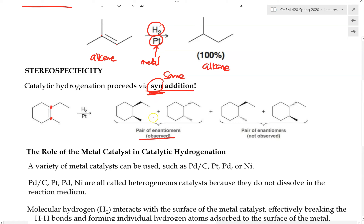The two products we observe are where the hydrogens are added in the back, or where the hydrogens are added in the front. These two molecules are a pair of enantiomers, and we do not observe the other diastereomers — the pair of enantiomers where one hydrogen is added to the bottom and the other on top. We only observe one set of enantiomers, which is why we call this syn addition.